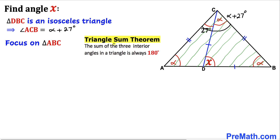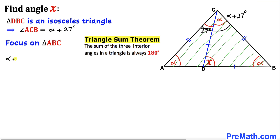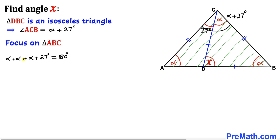Let's focus on the big triangle ABC once again and recall the triangle sum theorem: the sum of the three interior angles in a triangle is always equal to 180 degrees. In our case, alpha plus alpha plus (alpha plus 27 degrees) must equal 180 degrees. Combining like terms gives us 3 alpha plus 27 degrees equals 180 degrees.